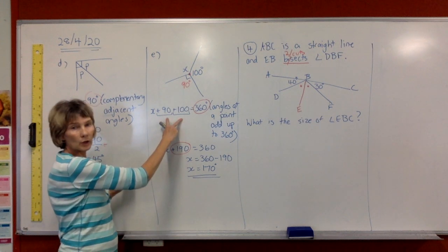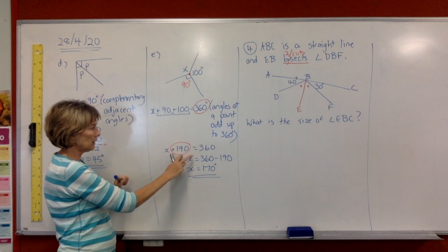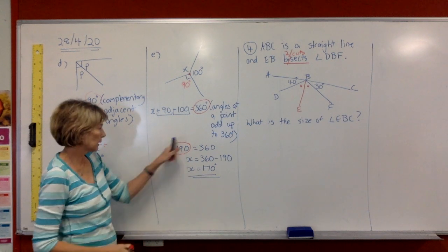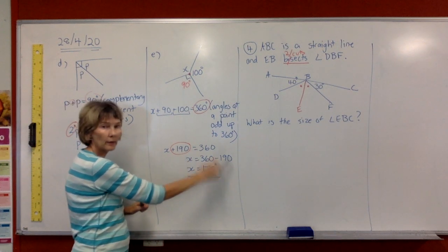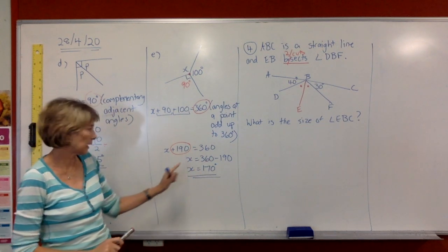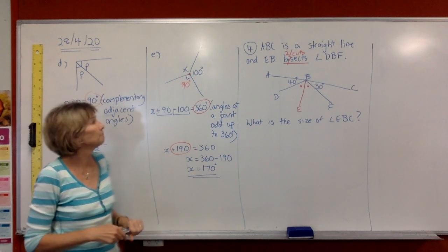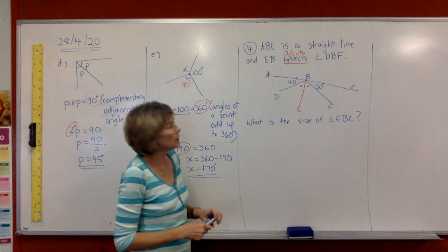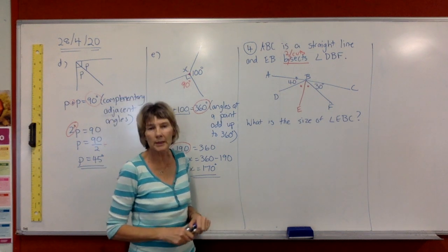So collect your like terms here on the left-hand side and you've got X plus 190 equals 360. Get rid of the plus 190. Move it to the other side at the end of the line and do the opposite operation, minus 190. And use your calculator to work it out. All right, this next question is a harder one. So some of you might have trouble with this, but we're going to work through it and see how we go.